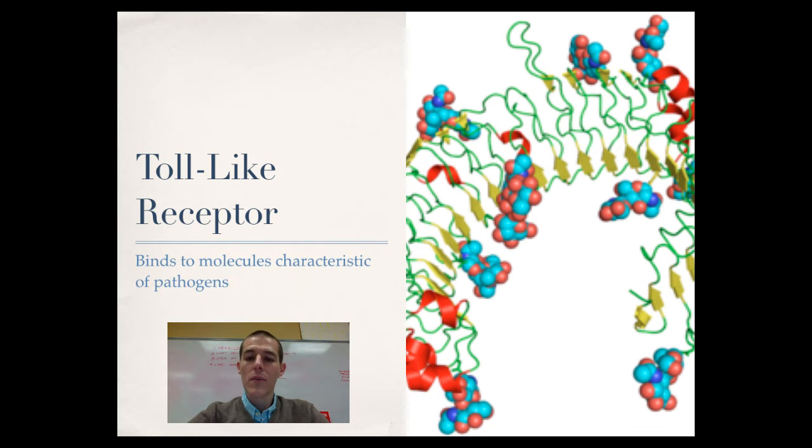So first up is a toll like receptor. Forgive the fuzzy image there, my apology. These guys bind to molecules characteristic of pathogens and there could be several things that this includes. It could include double stranded RNA that is found in some viruses. It could include receptor cells that are found on the surface of bacteria. Anything that is like kind of molecular level stuff,